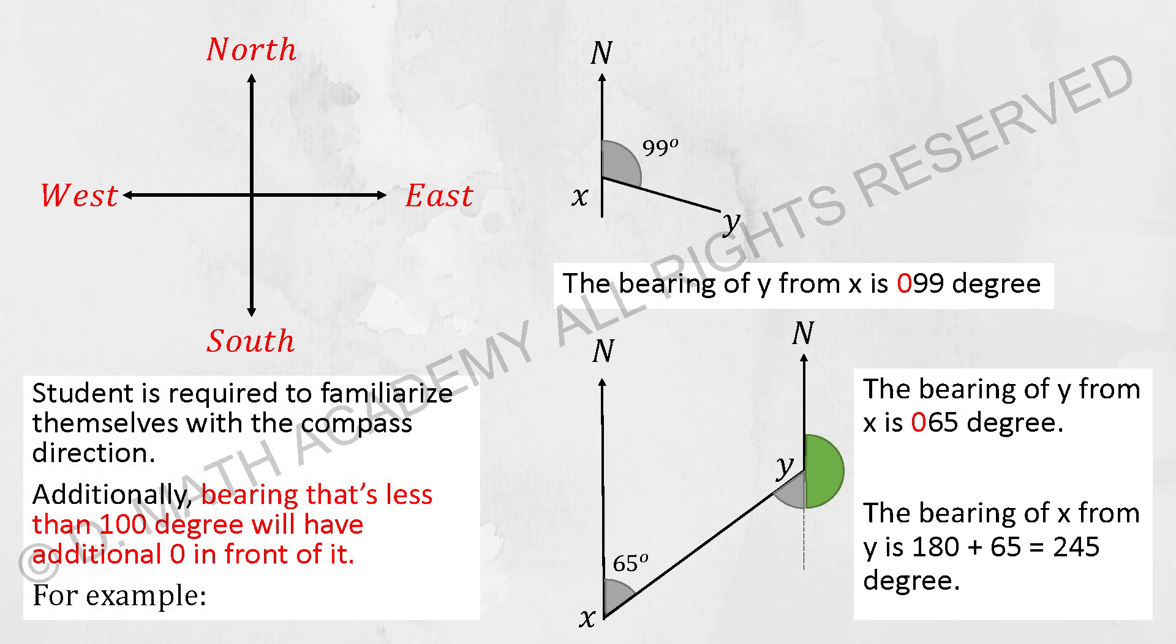Moving on, we are having a bearing question. First thing you need to know how to identify north, south, east, west. So additionally any angle that is less than 100, you have to add a 0 at the front.